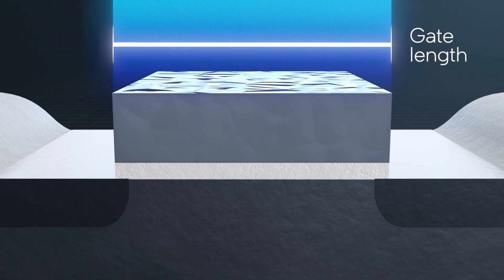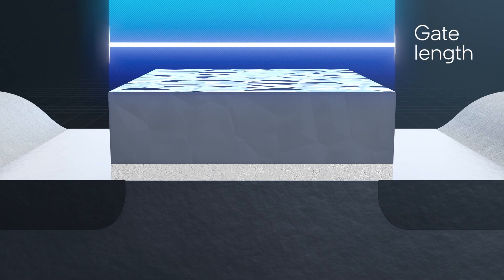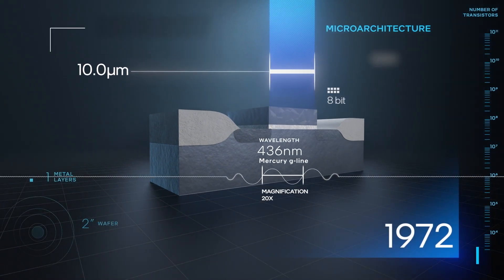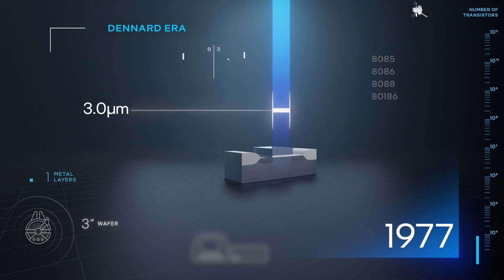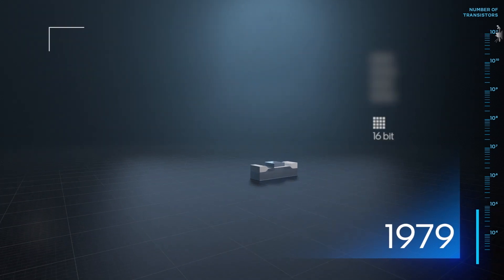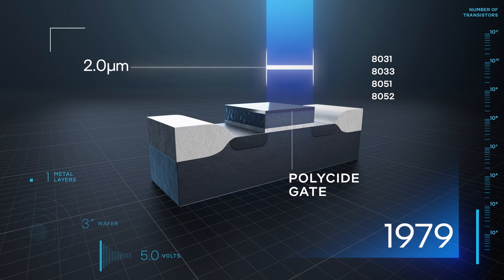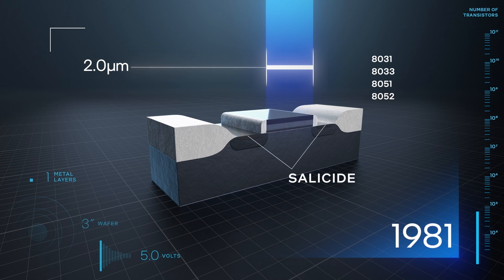The distance the electrons had to travel was originally how we measured these planar transistors. We made improvements by shortening that distance through shrinking dimensions first. We added new layers that improved control and speed.